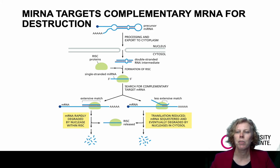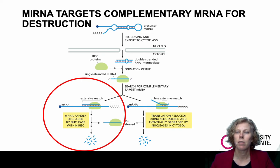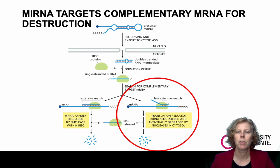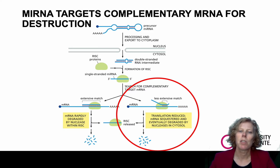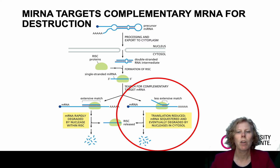Depending on how extensive the region of complementarity is, the target mRNA is either rapidly degraded by a nuclease within the RISC, or transferred to an area of the cytoplasm where other nucleases destroy it. Destruction of the mRNA releases the microRNA-bearing RISC, which can then target additional mRNAs, thereby efficiently blocking production of the encoded protein. There are roughly 500 different microRNAs encoded in the human genome, which may regulate as many as one-third of our protein-coding genes. We are only just beginning to understand the implications of these microRNAs, but have found that they play a critical part in influencing many cell functions.